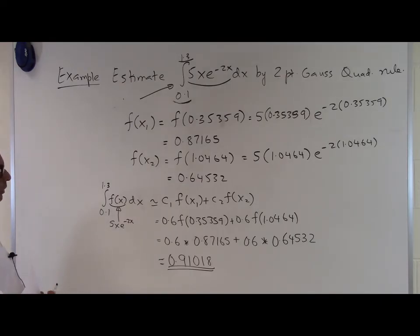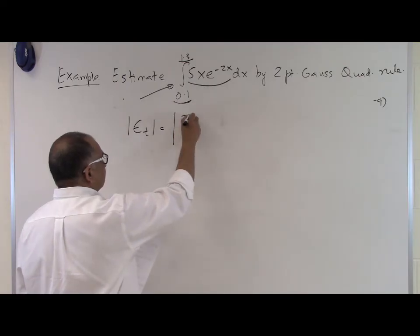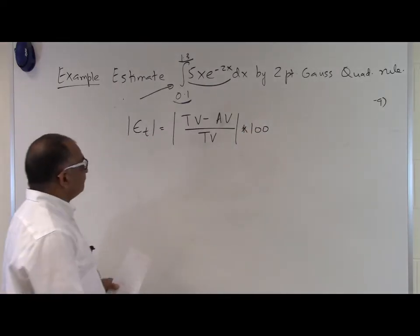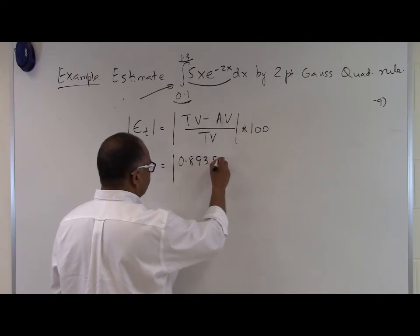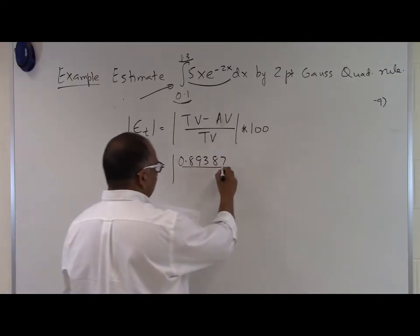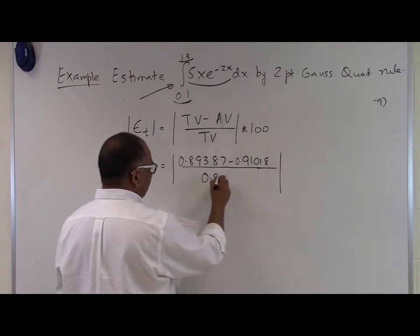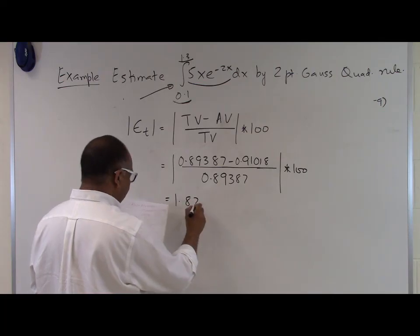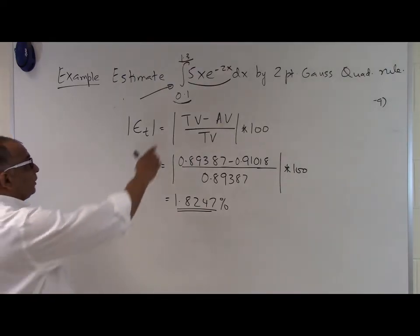Let's see how much relative true error this number has with respect to the true value. The relative true error is defined as (true value minus approximate value) divided by true value, multiplied by 100 for percentage. The true value is 0.89387, minus our approximation of 0.91018, divided by 0.89387, times 100 — giving a relative true error of 1.8247%. That's the amount of error using the two-point Gaussian quadrature rule on this integral.